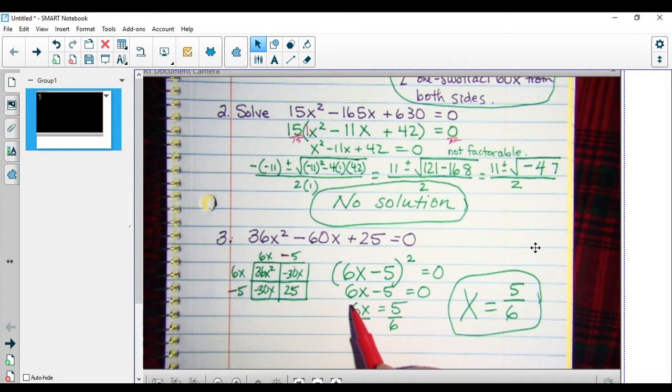Take the square root on both sides. 6x minus 5 equals 0. Add 5 to both sides. 6x is 5. Divide by 6. X is 5 sixths.